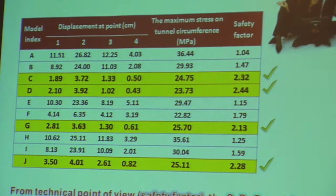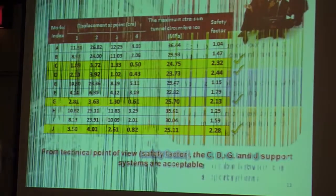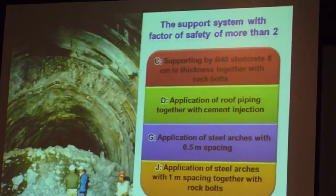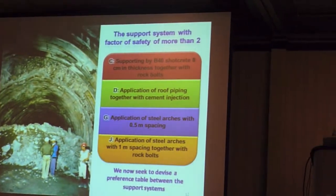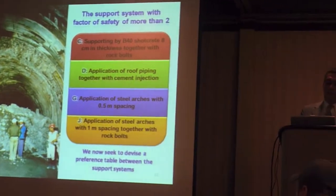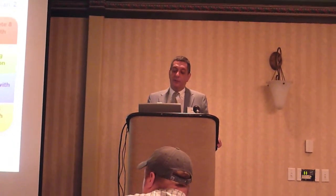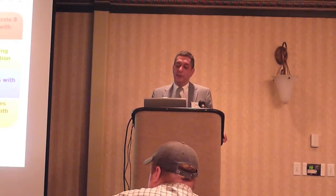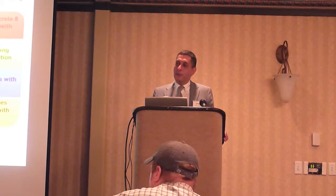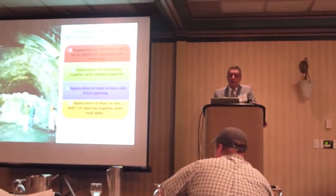Now we move to the multi-criteria methods to rank between these four acceptable systems. The four systems are: B-40 shotcrete 8 centimeters in thickness together with rock bolts; application of roof piping together with cement injection; steel arches with 50-centimeter spacing; and steel arches with one-meter spacing together with additional support.